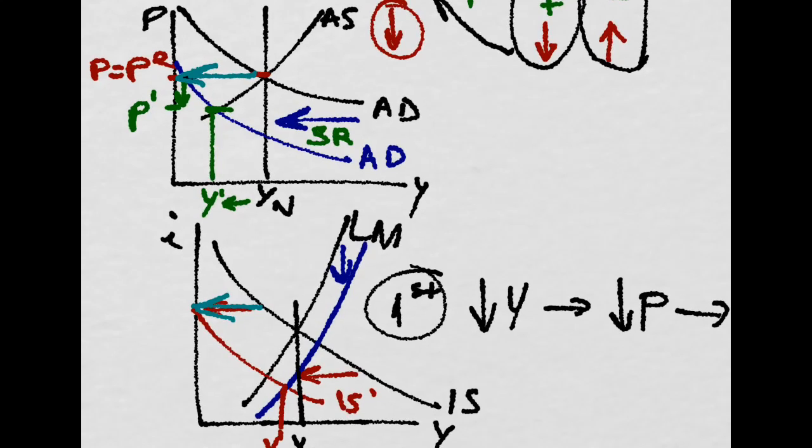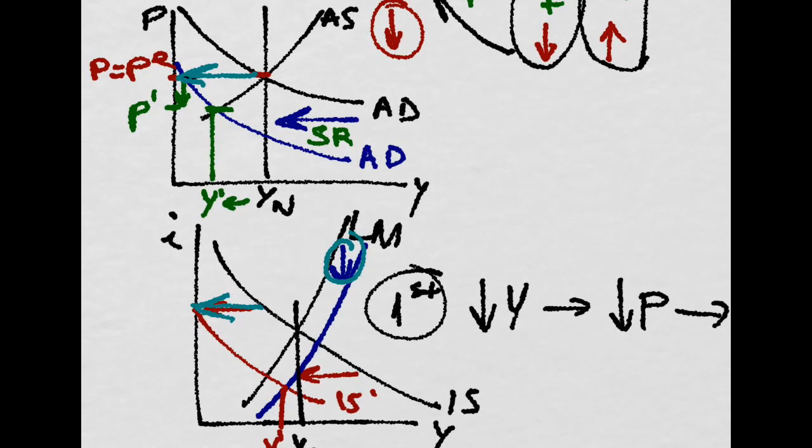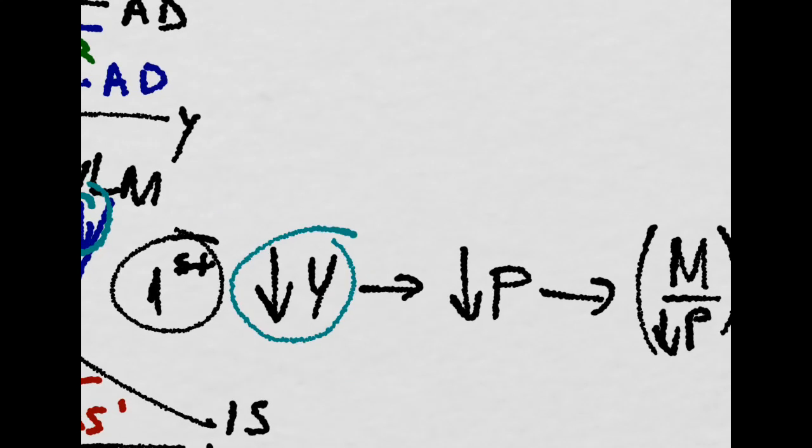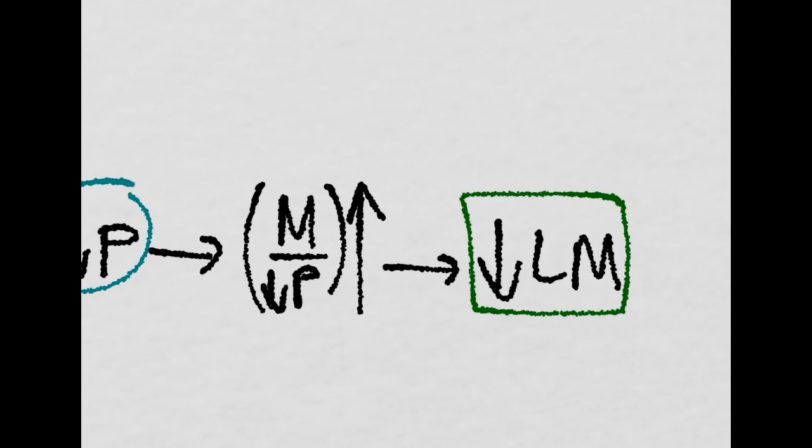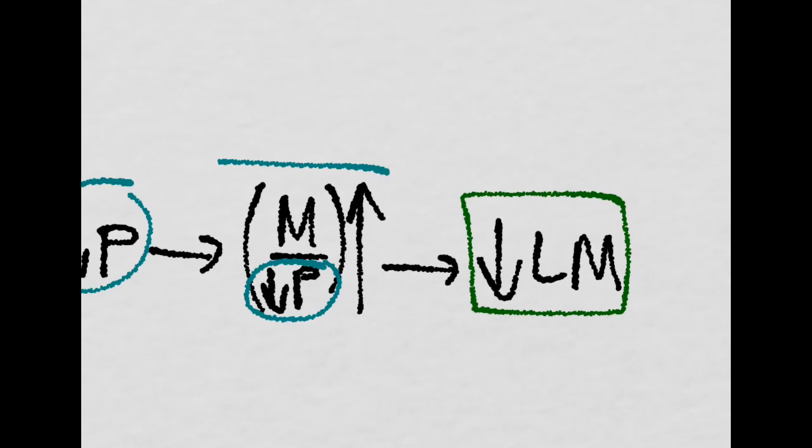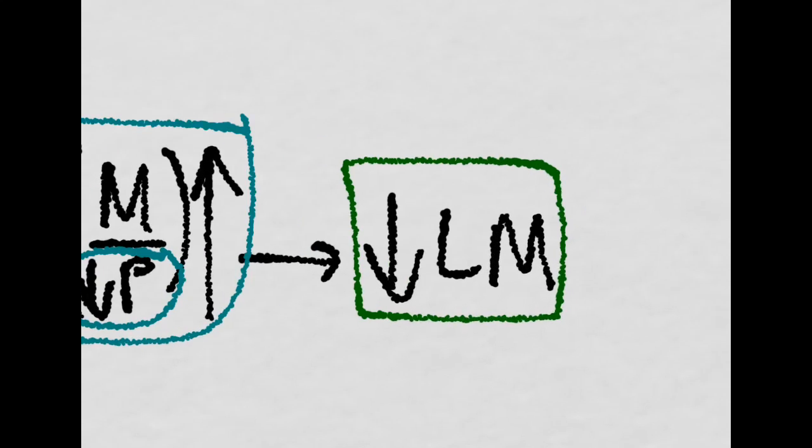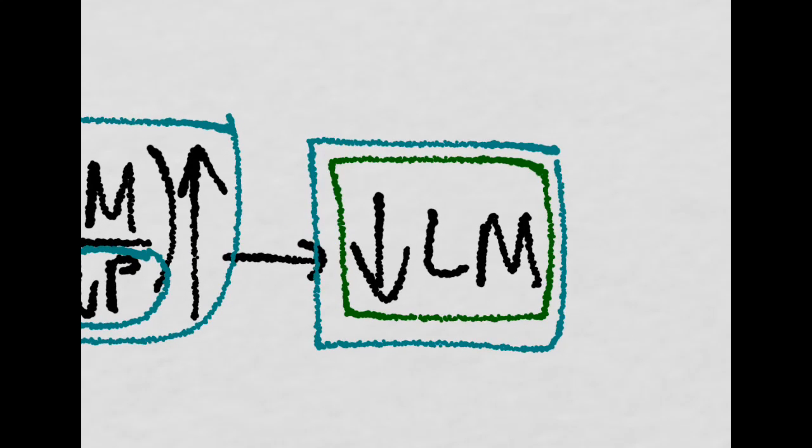And then if prices fall, the real money supply increases and that provokes a shift downwards of the LM curve. And this shift downwards will reach a new equilibrium right here.